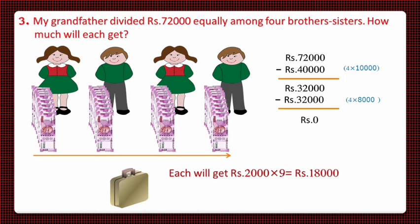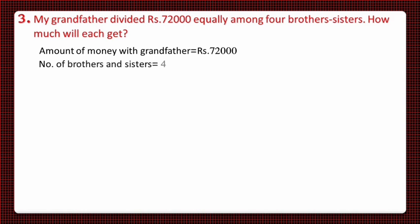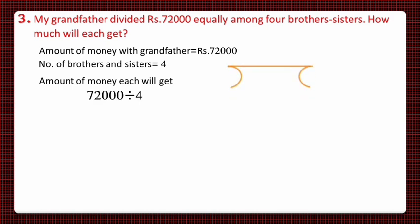Now we'll solve it using the formal method of division. The amount of money with grandfather is 72,000 and the number of brothers and sisters is four. The amount each will get equals 72,000 divided by 4. To divide 72,000 by 4, we'll read the table of 4.